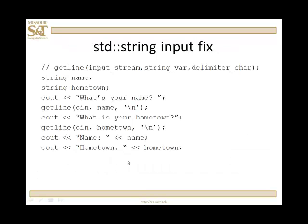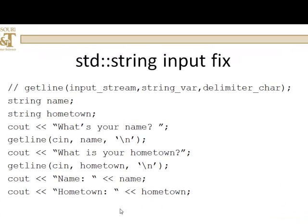Let's take a look at the fix — the getline function. There are two versions: one for standard string objects and one for C string objects. The parameters are an input stream, the string variable you're going to place information into, and a delimiting character. You can make that character any character you want — an exclamation point, a period, the newline character, or anything.